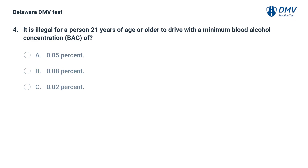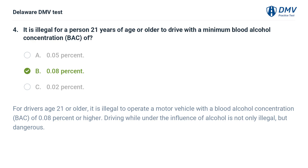It is illegal for a person 21 years of age or older to drive with a minimum blood alcohol concentration of: A. 0.05%. B. 0.08%. C. 0.02%. Answer: B. For drivers age 21 or older, it is illegal to operate a motor vehicle with a blood alcohol concentration of 0.08% or higher. Driving while under the influence of alcohol is not only illegal, but dangerous.